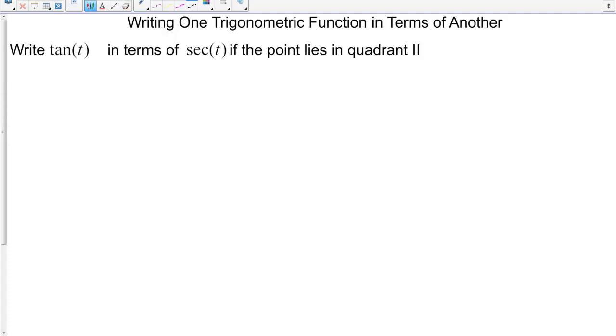We know that tangent squared of T plus 1 equals secant squared of T. That's one of our identities.